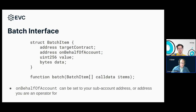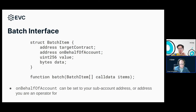The only difference from a regular multicall is this onBehalfOfAccount parameter. This is the source of authentication — what's actually being authenticated. If you put your own address there, that would obviously always work. But you can also put sub-accounts, and if you put sub-accounts from the same address that created this batch transaction, it will be allowed by the EVC because you're allowed to make operations on your own sub-accounts. If you are installed as an operator for one or more accounts, you can actually invoke them with this method too — you set the address of the user who installed you as an operator and you can make the operations, even doing several of them.